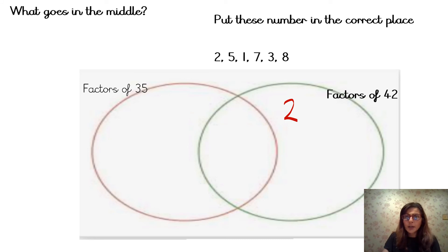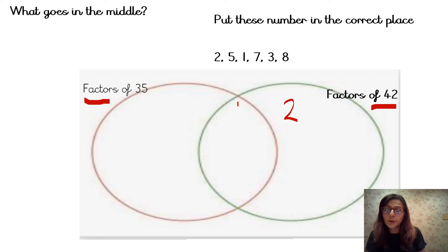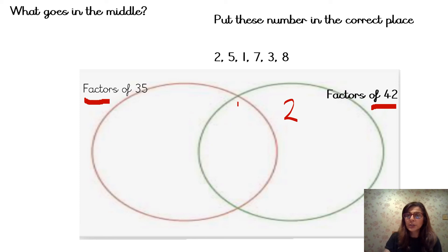I'd like you to have a go at completing this Venn diagram. On one side we want just the factors of 35, on the other side just the factors of 42, and in the middle section the factors which are common to both 35 and 42. I've done the number 2 for you already. The number 2 is not going to be a factor of 35 because 35 is an odd number, but it is definitely a factor of 42 because 2 times 21 equals 42. Pause the video and have a go, please.